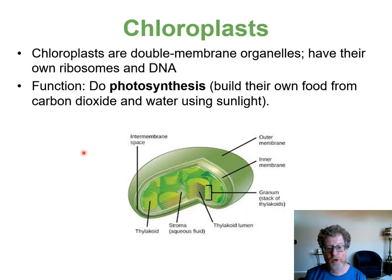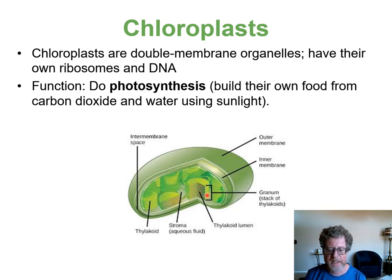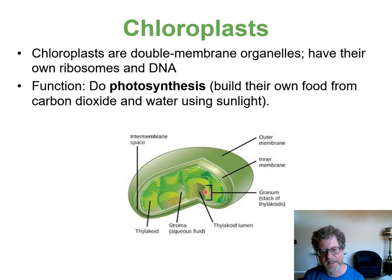Chloroplasts are an organelle found in plants but not animals. They contain the green pigment chlorophyll and have a double membrane on the outside with stacked membranes on the inside. The process of making their own food is called photosynthesis. Plants can build food from carbon dioxide and water, whereas animals need to eat other living things.